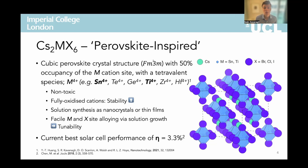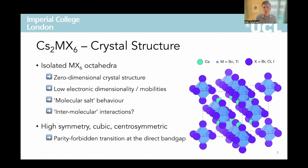Thus far, these materials have shown a record solar cell efficiency of 3.3%, with this relatively modest performance attributed to the relatively recent emergence and investigation of this class, the weak visible light absorption, and relatively low open circuit voltage. In this work, we focused on the tin and titanium-based polymorphs, as these have shown the most promise for potential application as photovoltaic absorbers. Looking closer at the structural properties, we can see that this 50% occupation of the cation site results in isolated MX6 octahedra with a zero-dimensional crystal structure.